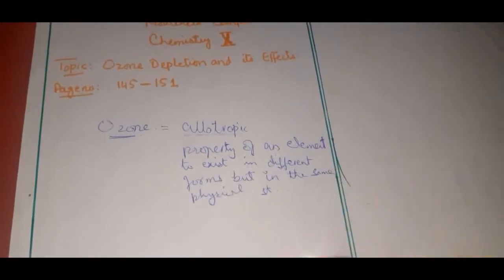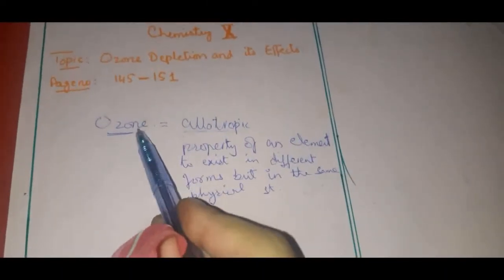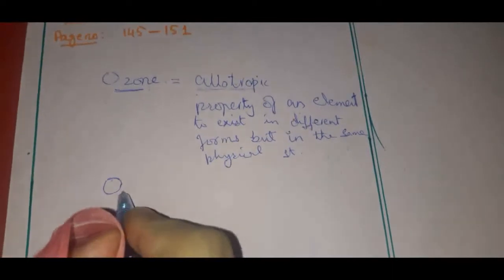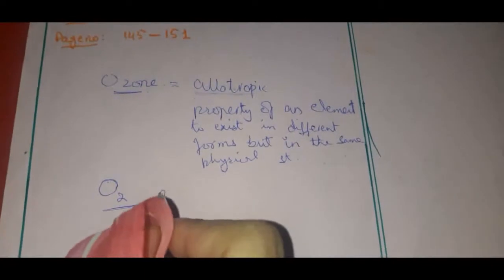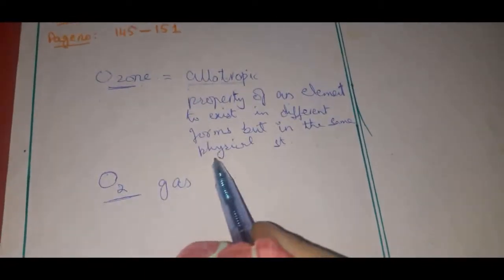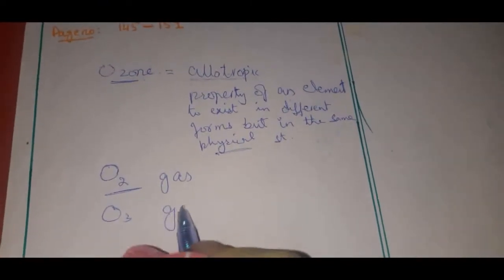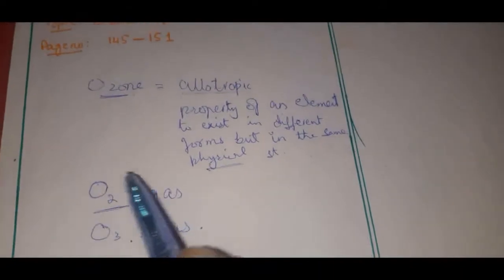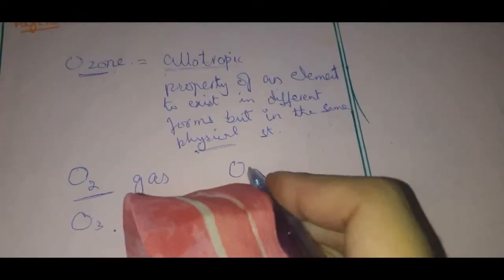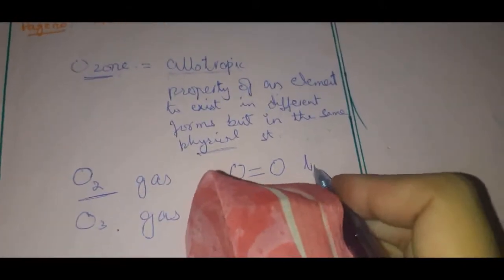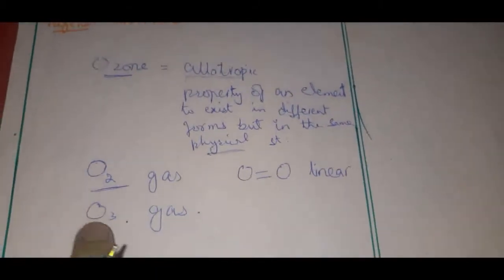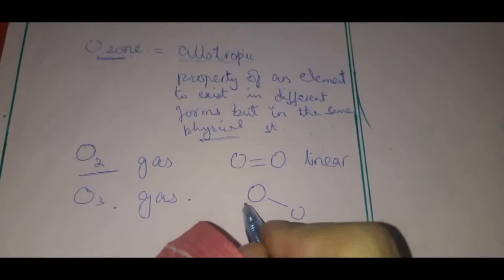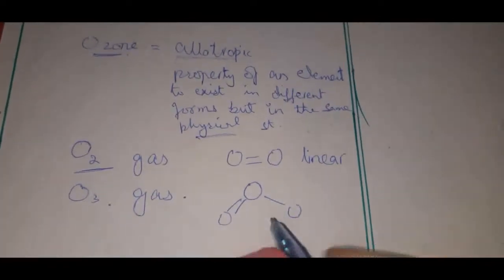Ozone is the allotropic form of oxygen. Oxygen is found in the form of oxygen gas, so its physical state is gas. This means ozone is also a gas, but it is different in its structural form. Oxygen gas is made up of two oxygen atoms doubly bonded together, and their structure is linear.